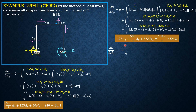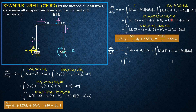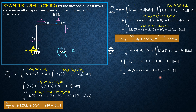Lastly, the partial derivative of U with respect to the moment Ma equals 0. We copy the moment equations and replace the partial derivative of each term with respect to Ma, which equals 1, so we simply replace with dx throughout all four sections.